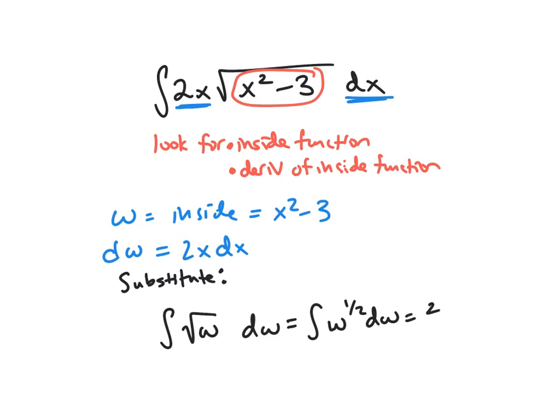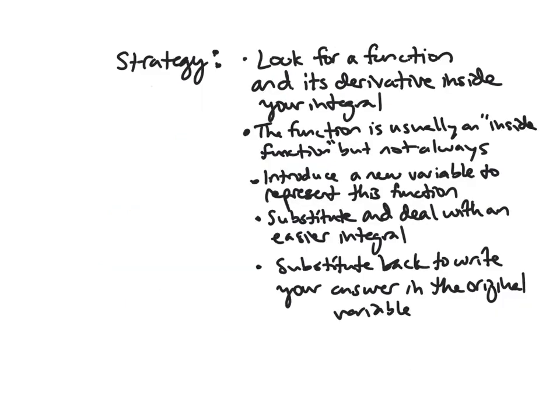You would get 2/3 w to the 3/2 plus c. And then since we started with something in terms of x, we should end in terms of x — so we substitute back: 2/3 times (x squared minus 3) to the 3/2 plus c. Our general strategy is to look for a function and its derivative both inside your integral. That function is usually an inside function, but not always — we will see an example where it's not. As long as it and its derivative show up, rename that function some variable, its derivative becomes d of that variable, substitute in, deal with an easier integral, then substitute back to your original variable.